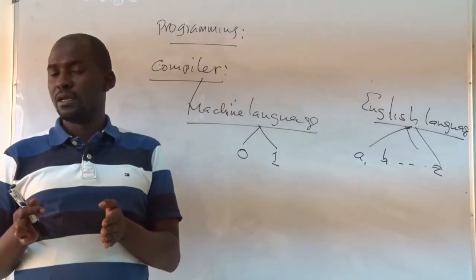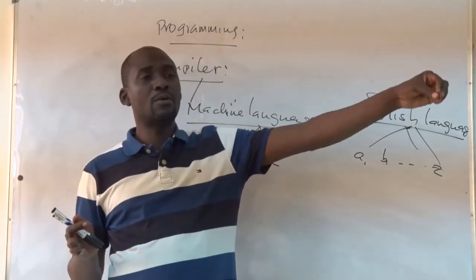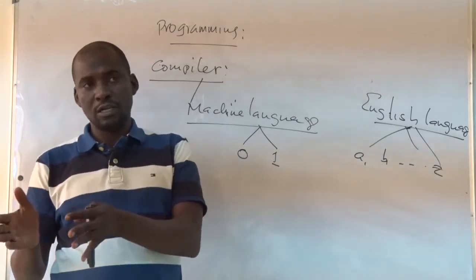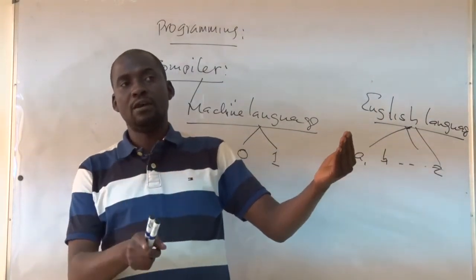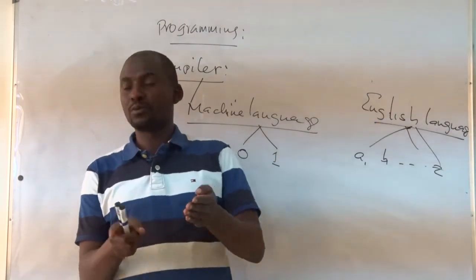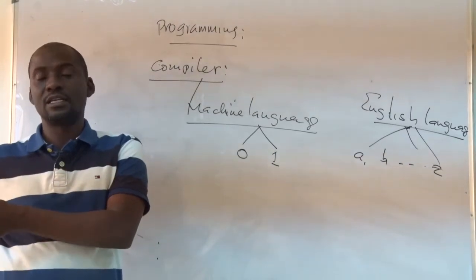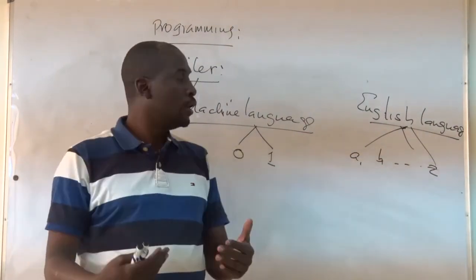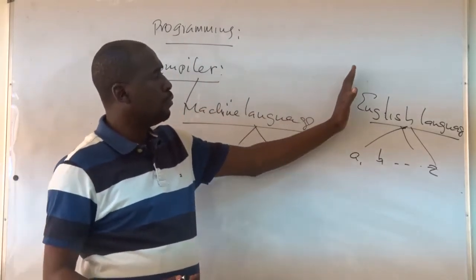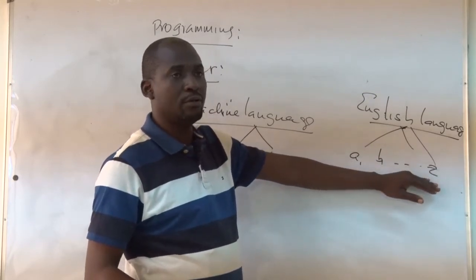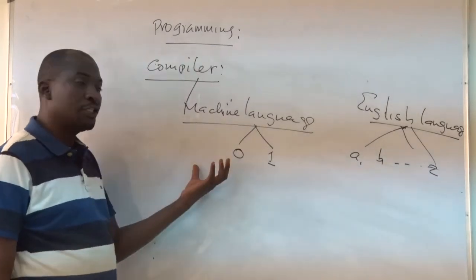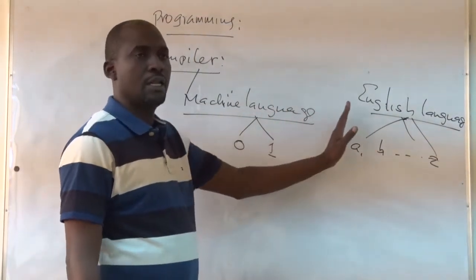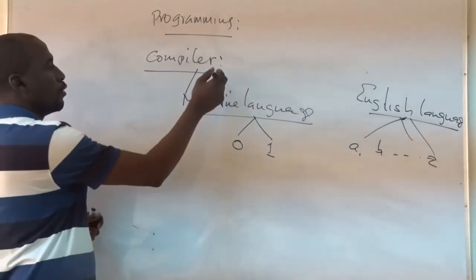This is normal — for example, if someone understands Chinese and we understand Swahili, we need somebody who understands both languages. The Chinese person speaks in Chinese, the interpreter converts it to Swahili so the Swahili speaker understands, and vice versa. This is what happens with computers: we write in a normal programming language using English alphabets, but the computer understands zeros and ones — machine language. So we need an interpreter in the middle, and this interpreter is what we call the compiler.